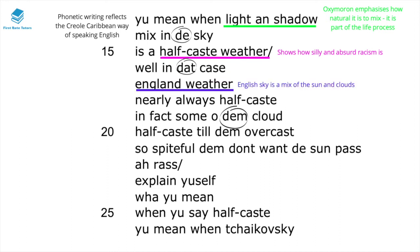He refers to England weather — and especially if you live in England, the English sky is always a mix of sun and clouds, sometimes rainy but also sometimes sunshine. So he's asking: does that therefore mean English weather is half-caste? Does it mean that it's inferior? And of course the answer is no, because that's very silly to think.